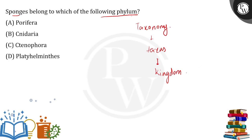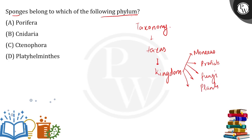The very first taxon is Kingdom, which is a vast taxon. R.H. Whittaker categorized organisms into five kingdoms: Monera, which includes bacteria, Protista, Fungi, Plantae, and Animalia. Further, animals have been categorized into different phyla.